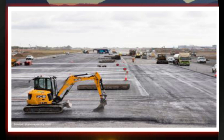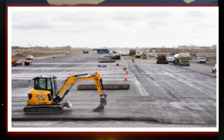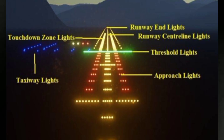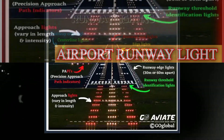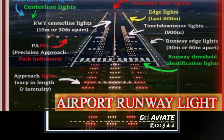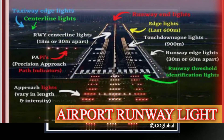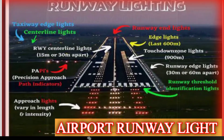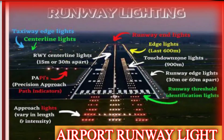Standard glide path angle: the PAPI system is designed to provide a standard glide path angle of 3 degrees, which is the typical approach angle for most commercial runways. This angle allows for a stabilized and controlled descent, leading to a safe landing. Consistency and reliability: PAPI lights are calibrated and maintained to ensure their accuracy and reliability. Pilots can trust the PAPI indications during their approach, knowing that the system is regularly checked for accuracy.